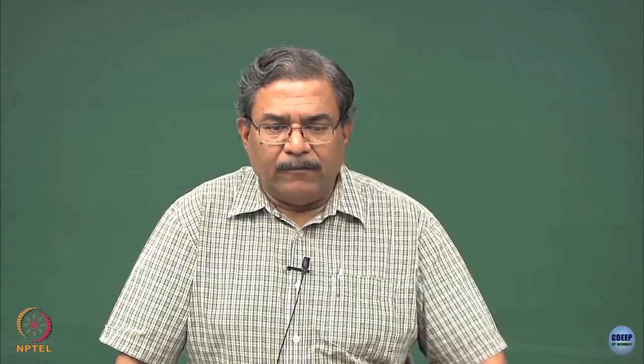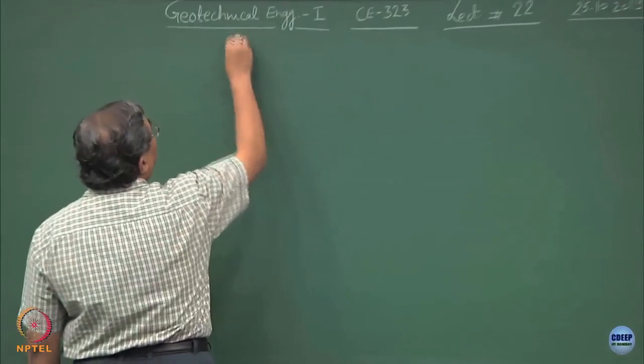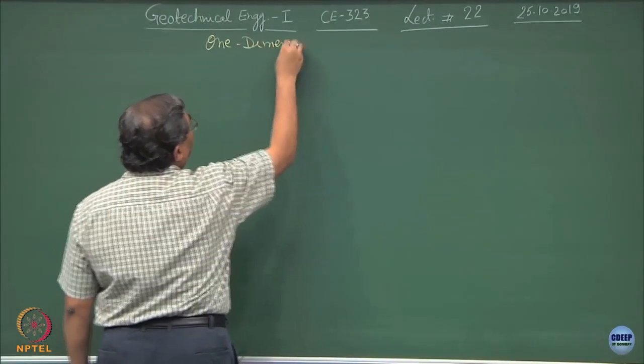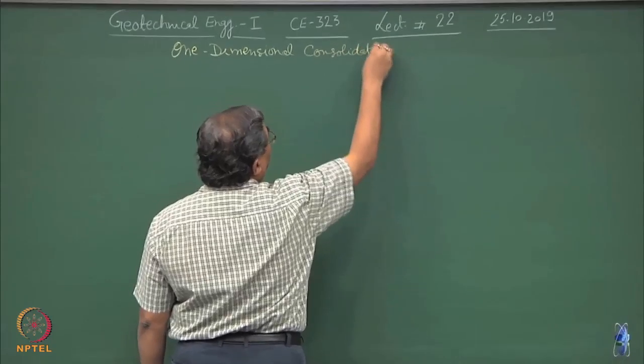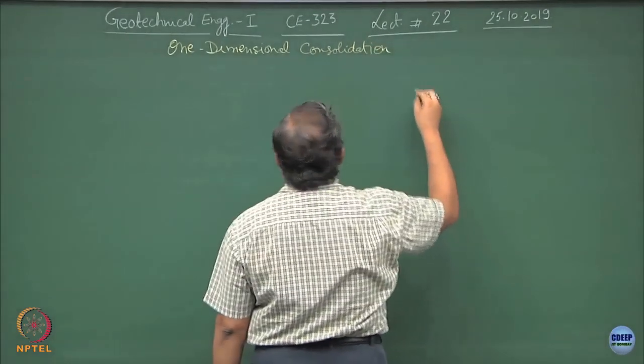In today's discussion, I will be talking about the derivation of the one-dimensional consolidation equation, which is used to obtain pore water pressures as a function of time and depth z. Once the pore water pressures are known, I can obtain the settlements undergone by the soil mass because of the external loading. To begin with, let us derive the one-dimensional consolidation equation.